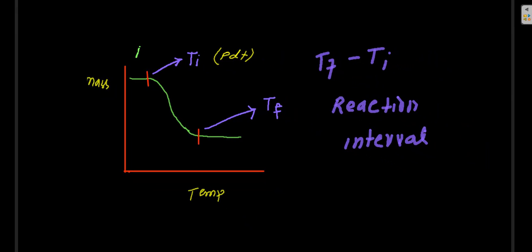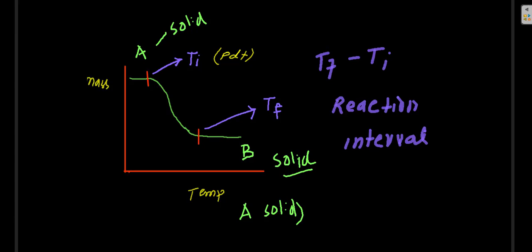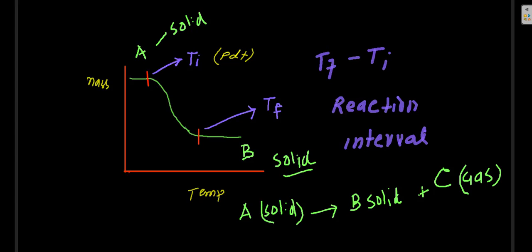For example, consider component A being transformed into component B. A is a solid and B, which is left behind as a residue, is also a solid. This can be represented as: solid A is converted into solid B, and a gaseous substance C is evolved during the course of the process. Ti is the point where gas C begins to form, and Tf is the point where the process has ended and we obtain a uniform straight line.